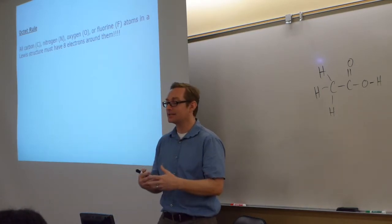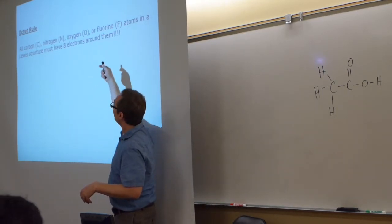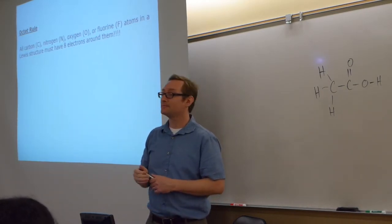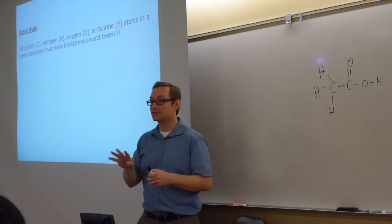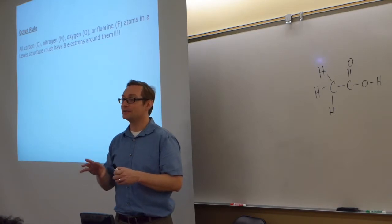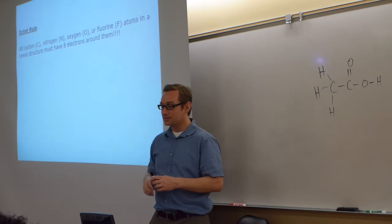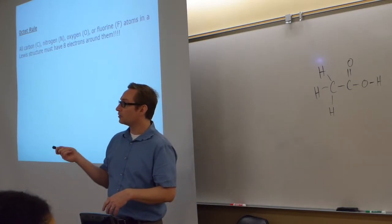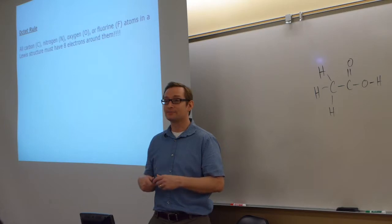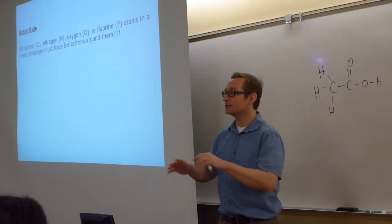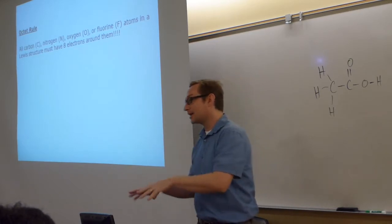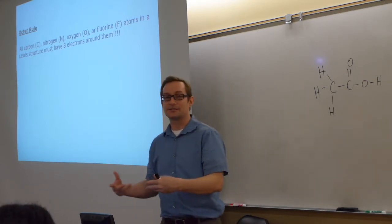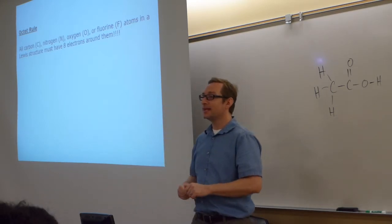It turns out only four atoms must have an octet: carbon, nitrogen, oxygen, and fluorine — C-N-O-F, as I call it. They're all together in the periodic table. Only those four elements must have an octet of eight electrons in the Lewis model. If the atom is larger than fluorine, it can actually have more than eight electrons. If it's before carbon, it can have less than eight. So I'm going to ask you to unlearn that all atoms get an octet — and relearn it this way.